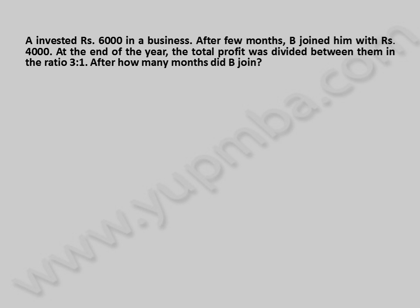A invested 6,000 rupees in a business. After few months, B joined him with 4,000 rupees. At the end of the year, the total profit was divided between them in the ratio 3 is to 1. After how many months did B join?